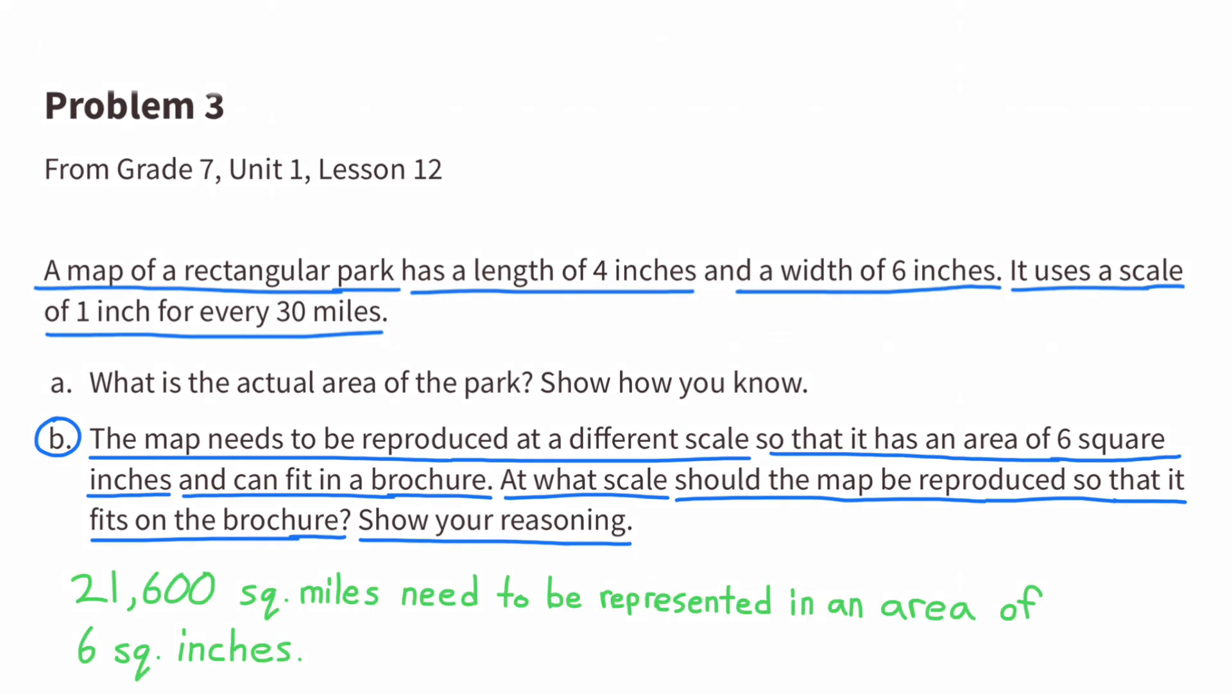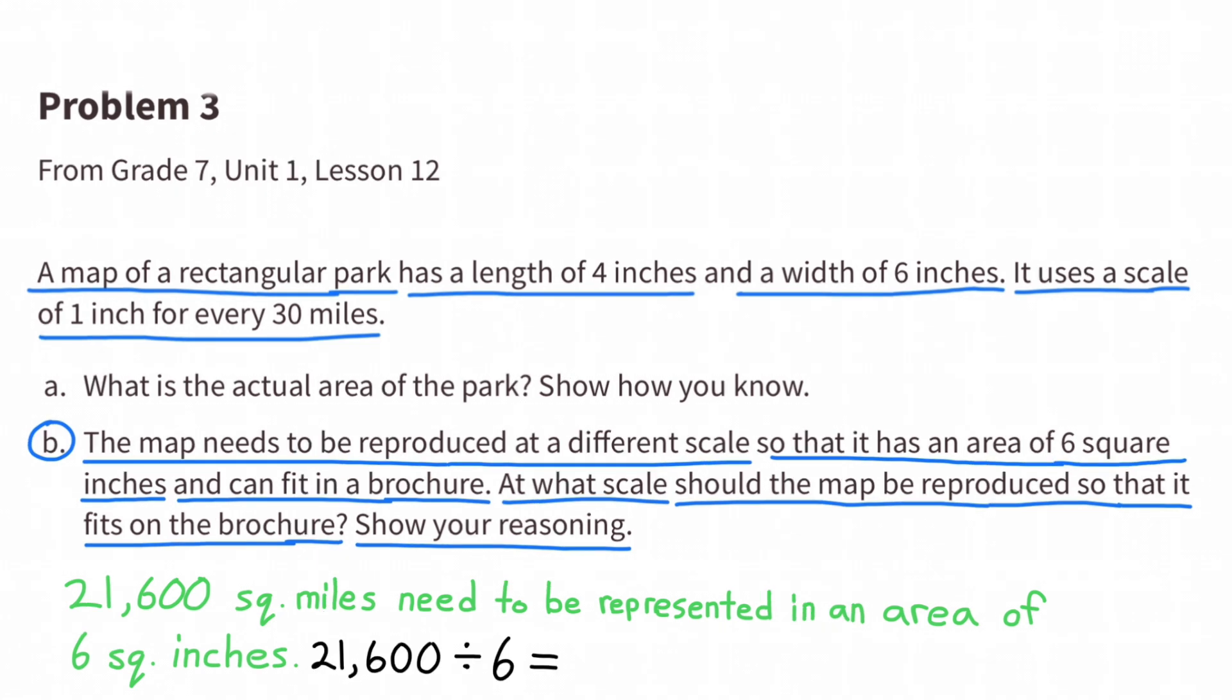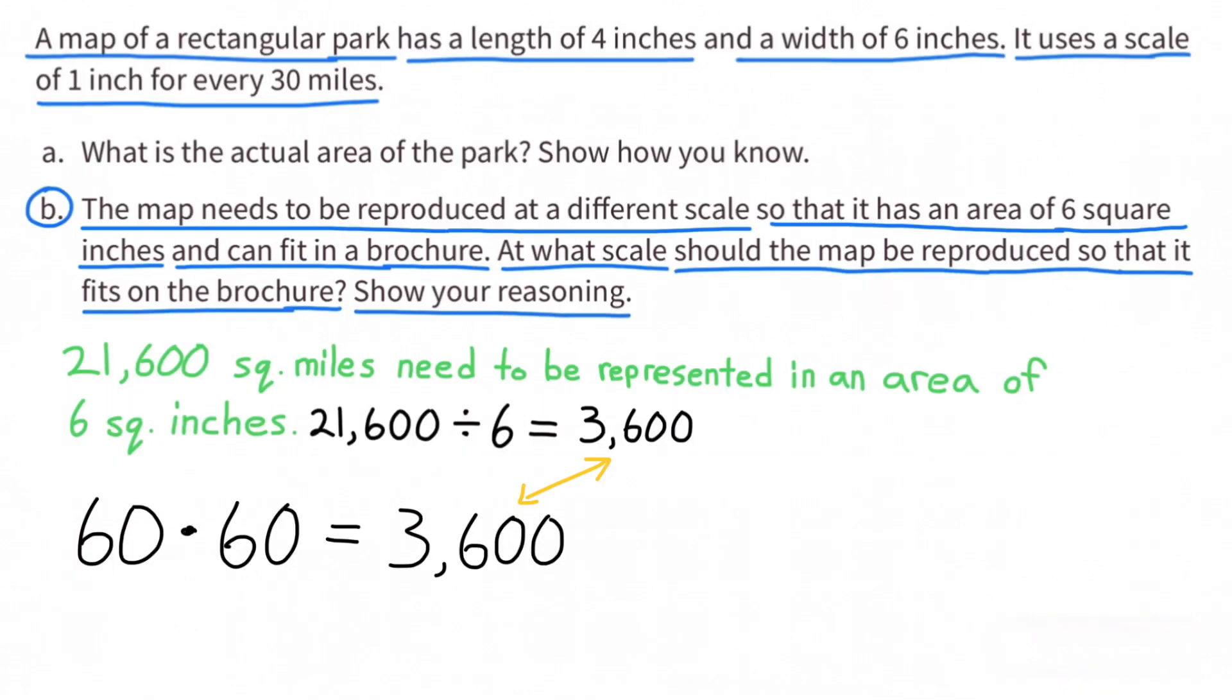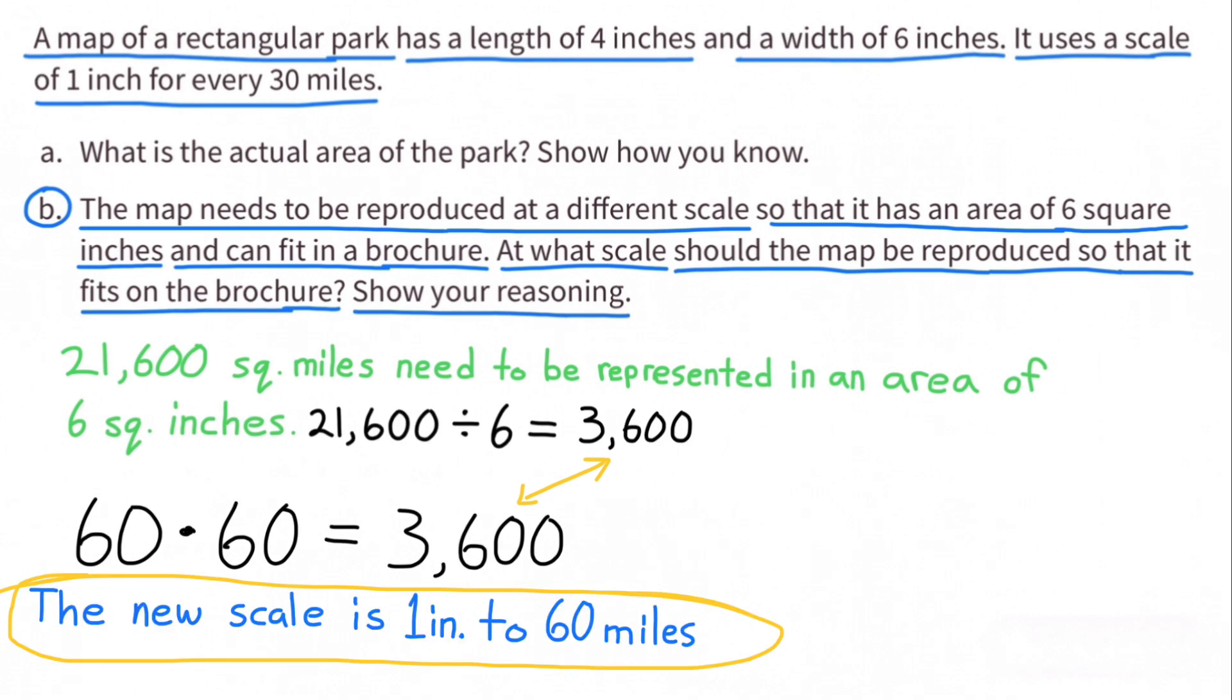What this is saying is that 21,600 square miles needs to be represented in an area of 6 square inches so that it will fit in a brochure. Take the area, 21,600, and divide it by 6, and that would be 3,600. Since 60 times 60, or 60 squared, equals 3,600, the new scale would be 1 inch to 60 miles, or 1 inch for every 60 miles.